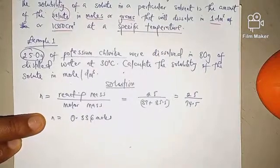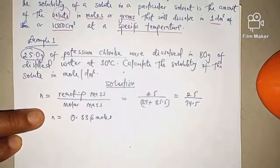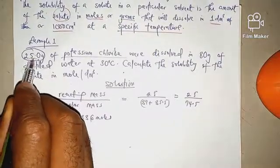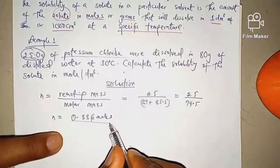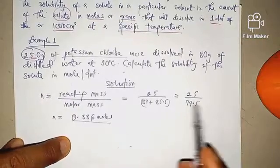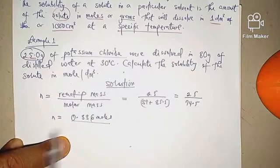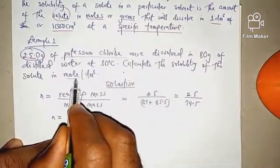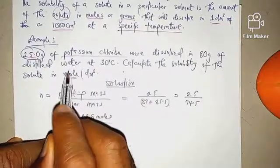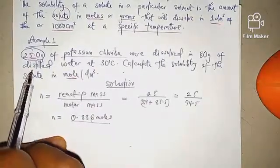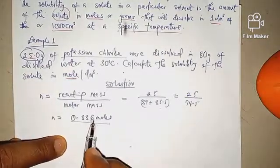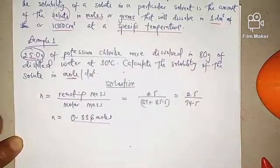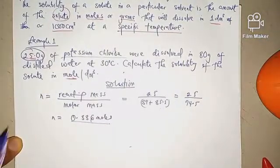These 0.336 moles are simply the equivalent of 25 grams, but expressed in moles. I have to come back to moles because our question asks us to calculate the solubility of the solutes in moles per dm³, not in grams per dm³. That is why we must convert it down to moles. So now I have the equivalent of 25 grams in moles.